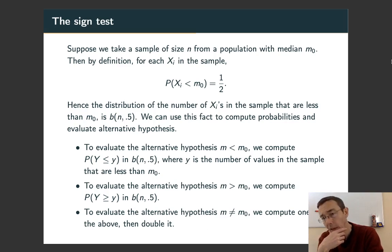So if the null hypothesis is true and the population really does have a median m0, then whenever we take a draw from that population, we have a 50% chance of getting a value below that m0 and 50% chance of getting a value above that m0. That's what the median is. It splits the probability distribution in half.